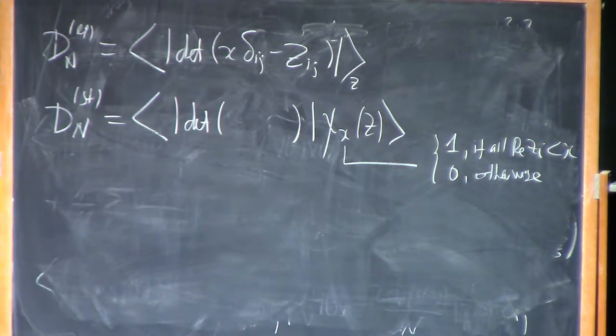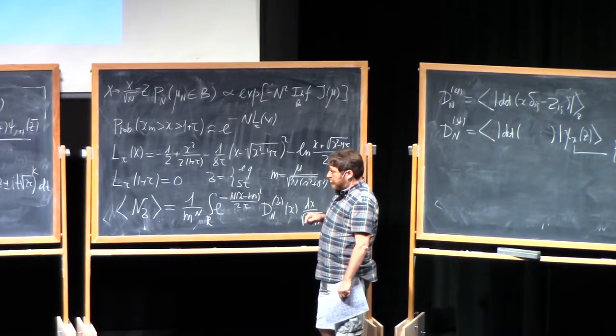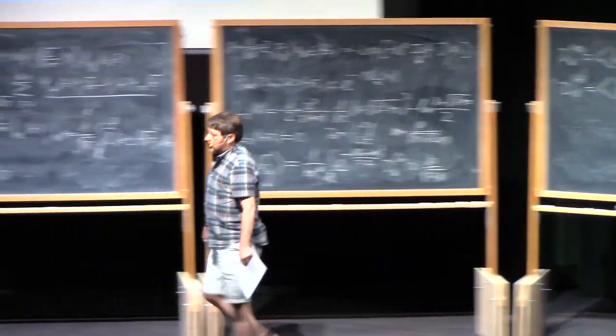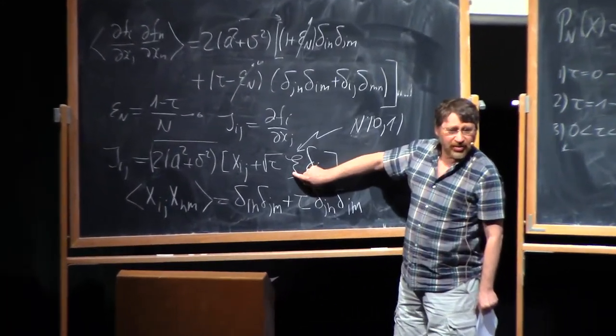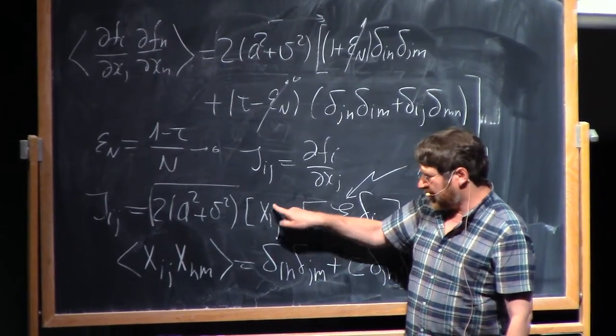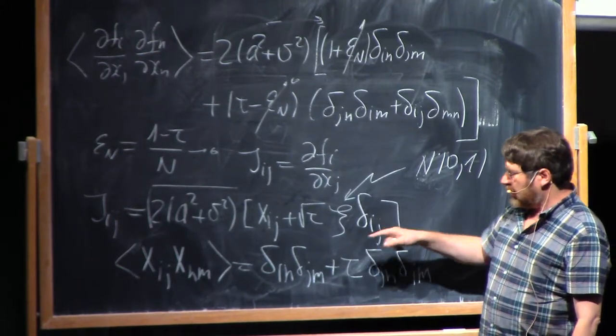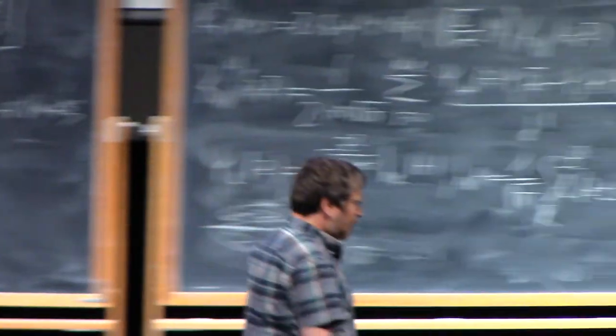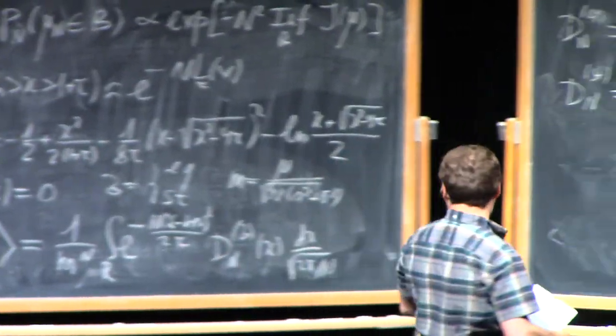Namely, d_n equilibrium is just expected value of determinant of x delta ij, I will write, minus z_ij. Okay, where z is this rescaled elliptic ensemble, rescaled to have equilibrium density in interval of order of unity. And similarly, not surprisingly, d_n stable is the same, basically the same determinant. The same determinant, but just condition chi_k of z, where chi is indicator function, which is one if all real part of eigenvalue smaller than x. So that's why it bears index x, and zero otherwise. So, okay, just a few words, how this, we remember that it was just expectation of ensemble of Jacobian matrices, and there was no integral, so how this integral appeared. This integral is just basically rescaled integral, just averaging over this normal variable psi.